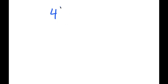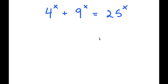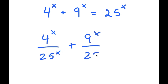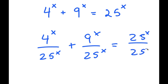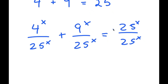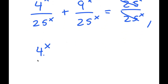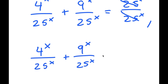In this video, I'm going to solve the equation 4 to the power of x plus 9 to the power of x is equal to 25 to the power of x. To solve this, I'm going to start off by dividing every term by 25 to the power of x. So I get 4 to the power of x divided by 25 to the power of x plus 9 to the power of x divided by 25 to the power of x is equal to 1.